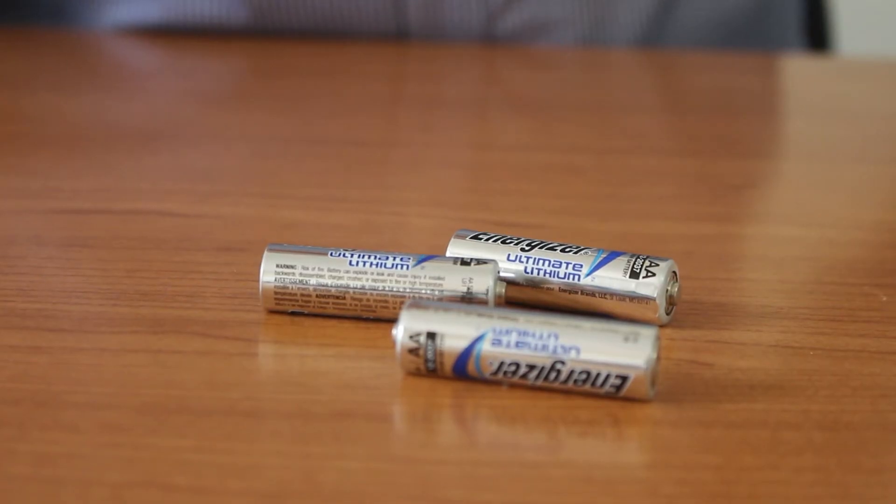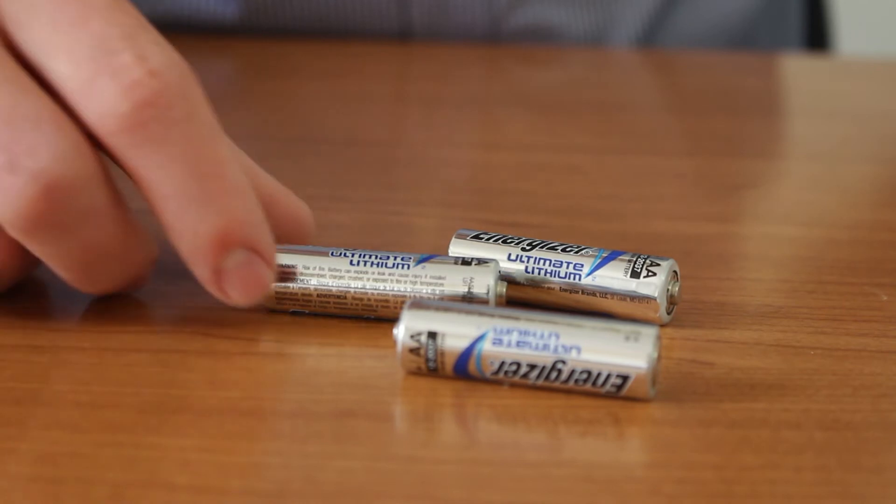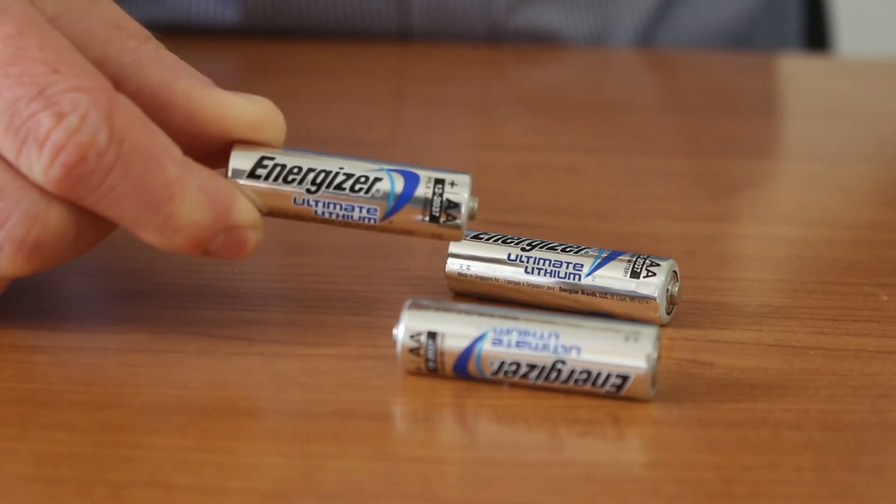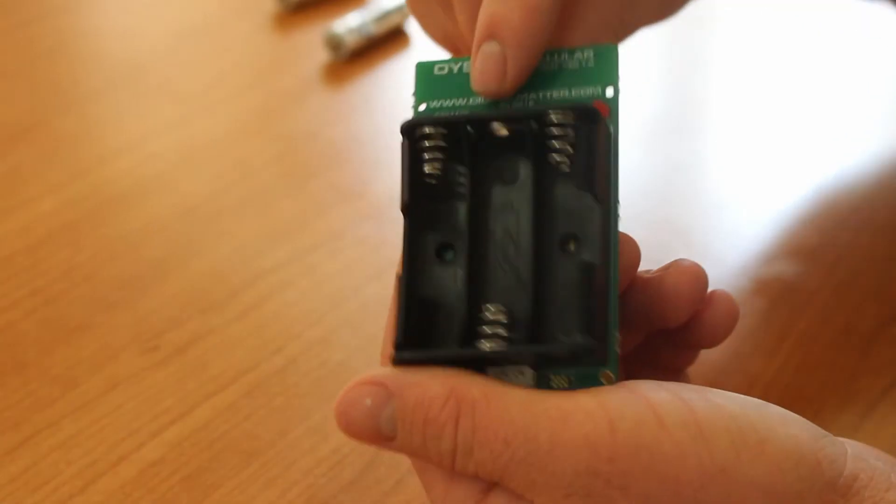You will need three 1.5 volt AA lithium batteries like these Energizer Ultimate Lithiums, easily found at your local supermarket. With just these three AA batteries, the device can remain operational for up to four years.